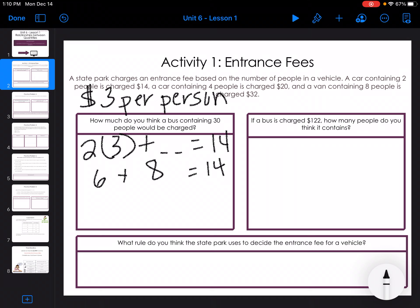So if they want to figure out 30 people, I would take 30 and multiply it by three and add eight. So that would be $98 for the 30 people going in in some sort of bus.